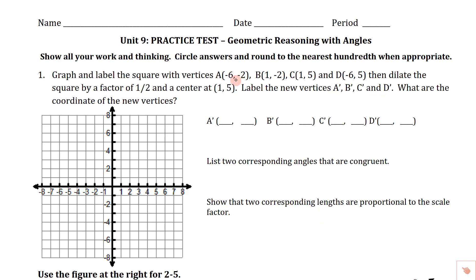Let's mark A on here. A is at (-6, -2), right down here. B is at (1, -2), so there's B. C is at (1, 5) — that's our center of dilation. And D is at (-6, 5), back six and up five. Clearly we've got a rectangle; it sure looks like a square, and we'll assume they're right about that.